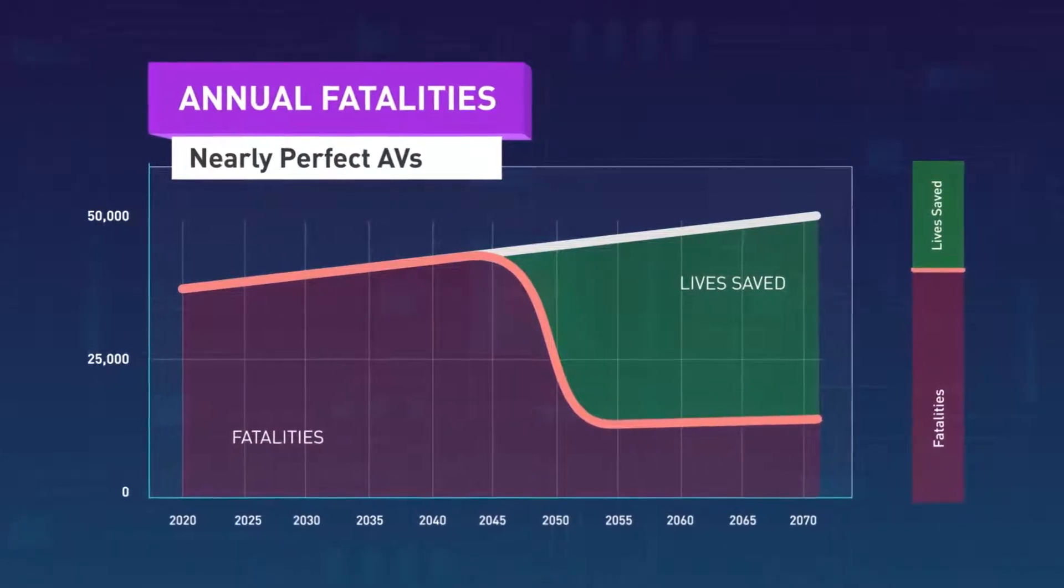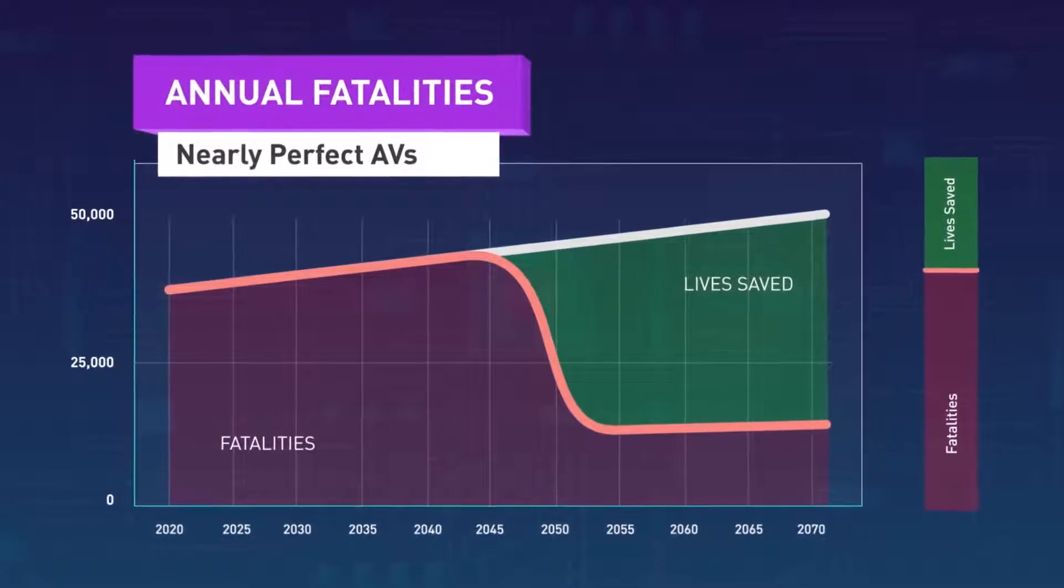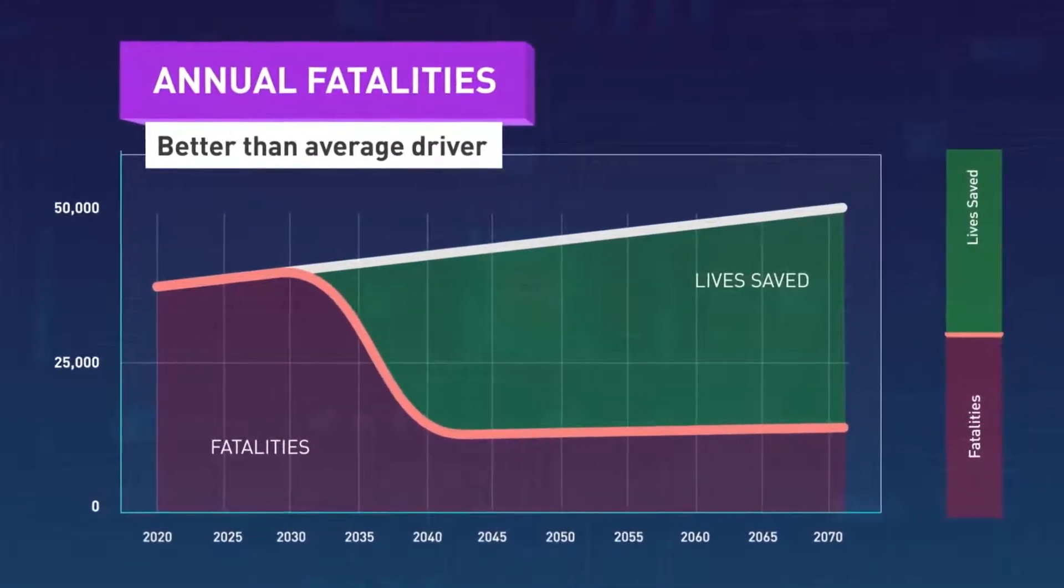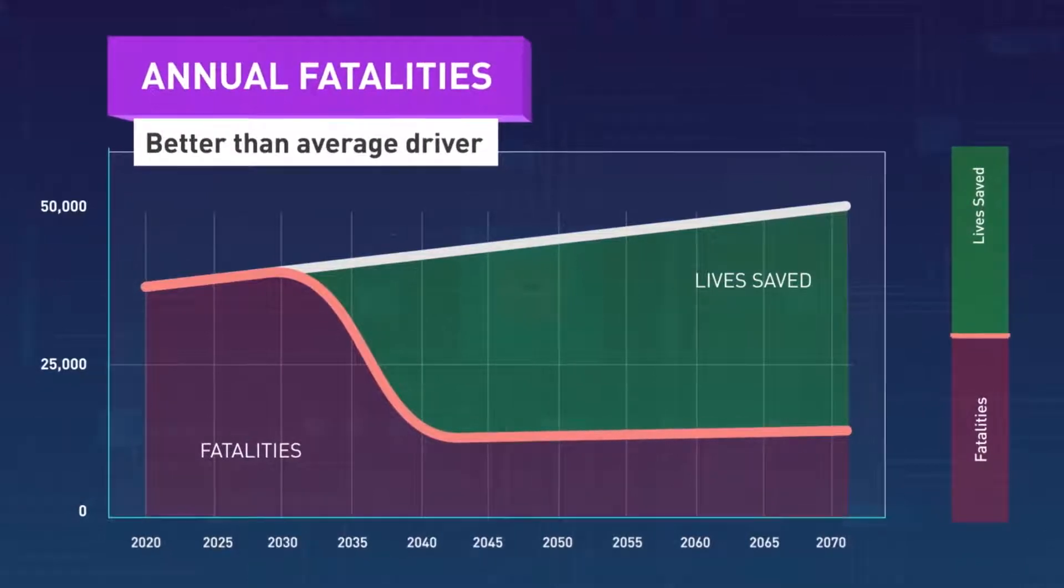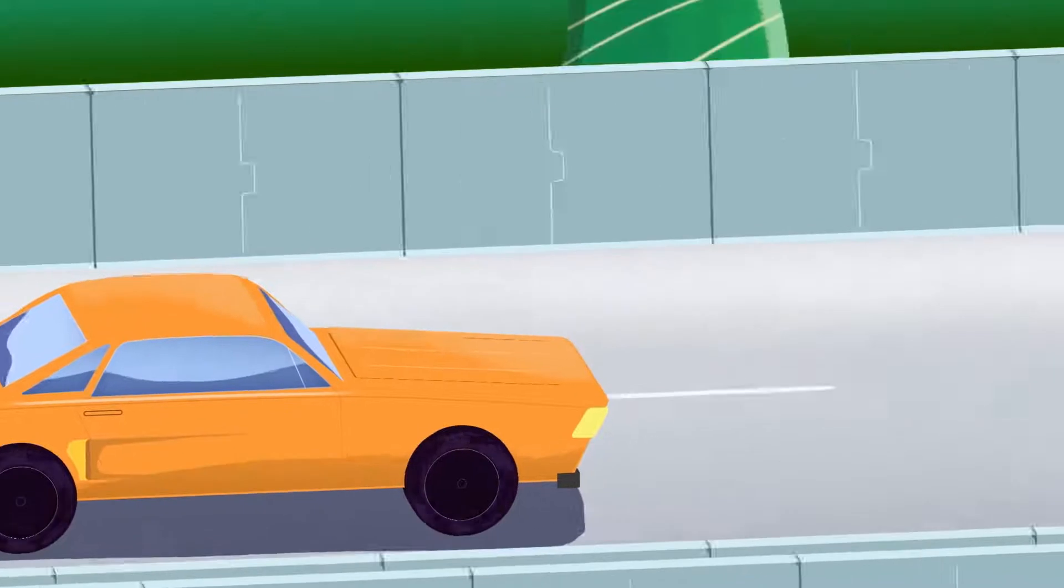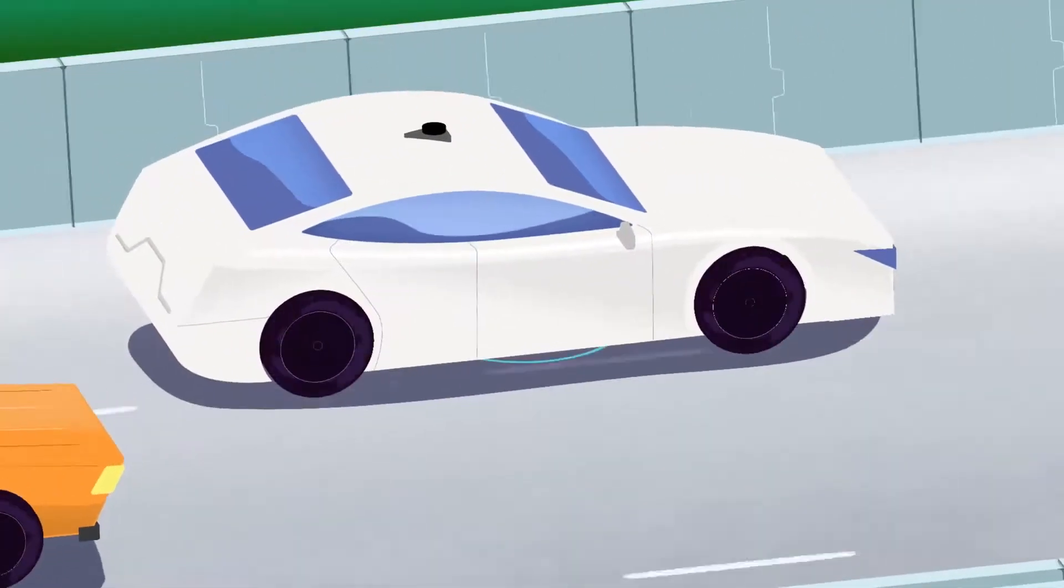It turns out that introducing AVs when they are less than perfect, when they're merely better than the average human driver, may actually save more lives in the long run. Because we're introducing them sooner, we're not waiting. As a result, they get safer faster.